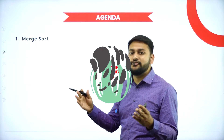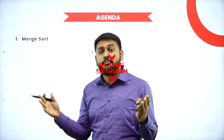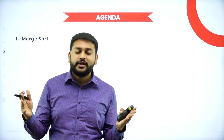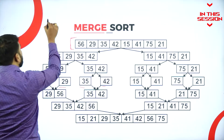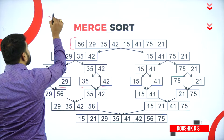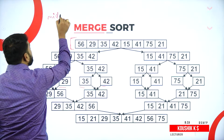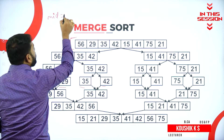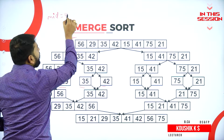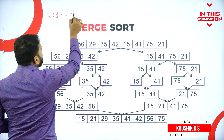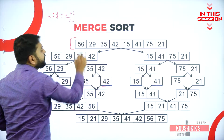Let me tell you how exactly we perform merge sort very comfortably. The formula that is going to be used is: mid is equal to upper bound plus lower bound divided by 2.